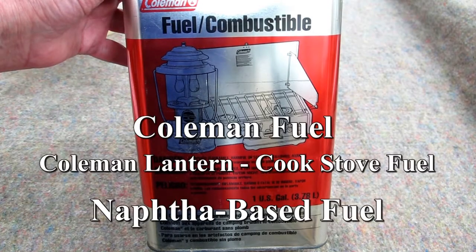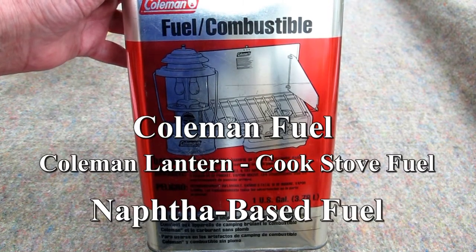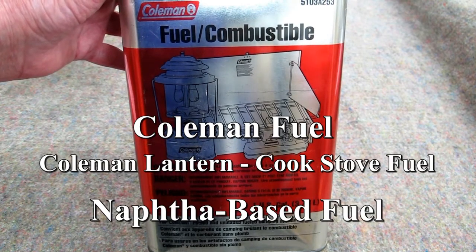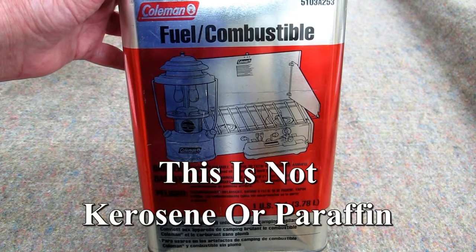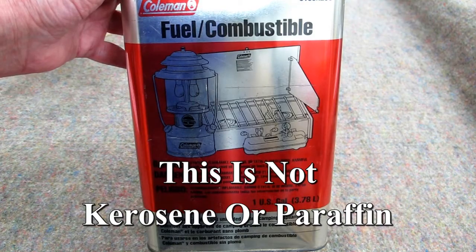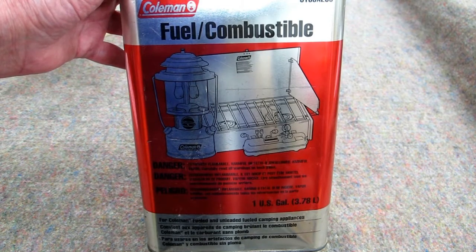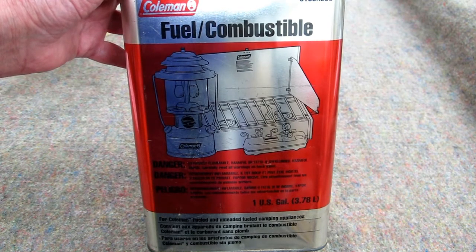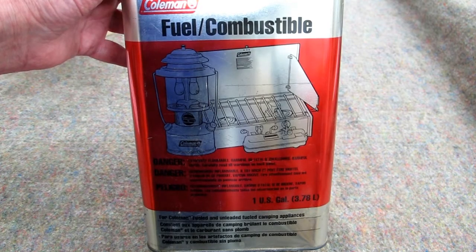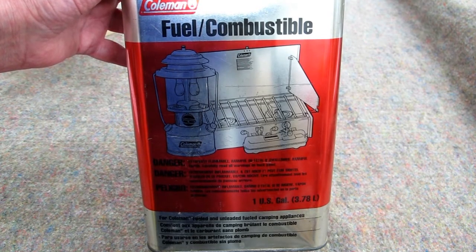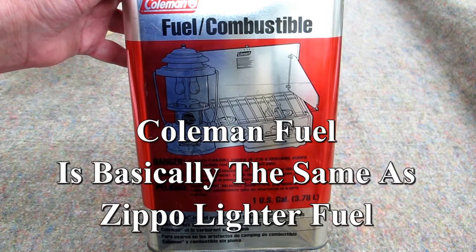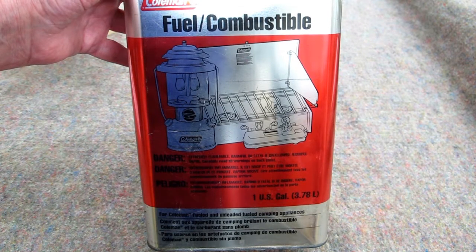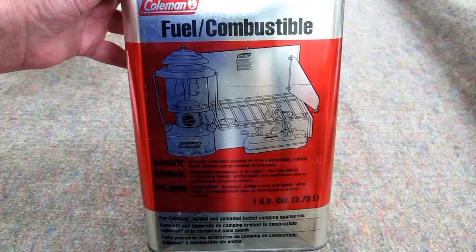This is a one gallon can of Coleman fuel. Coleman lantern fuel, Coleman cook stove fuel, it's the same thing. And this is a NAFTA base fuel. This is not kerosene. It is not paraffin. When I say Coleman lantern fuel, that's what we think of it as here in the U.S. If you look at the picture on the can, that's a picture of a camping lantern and a camping cook stove. So Coleman fuel or Coleman lantern fuel, this is a NAFTA based fuel. Same thing as Zippo lighter fluid. I can't say this enough because of the apparent confusion between nomenclature in the different countries.